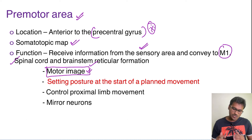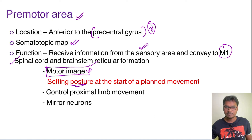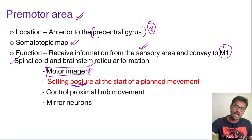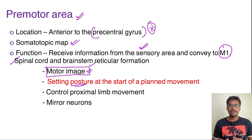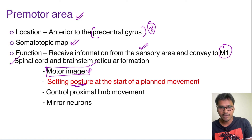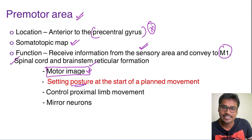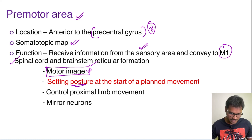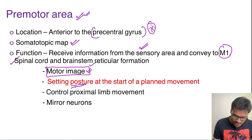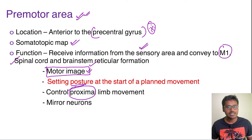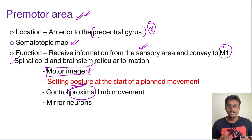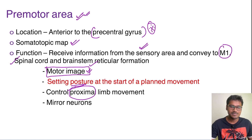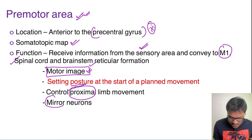The premotor area also sets up the background posture for a planned action. For example, if an object is far away, the body posture must first be adjusted before extending the hand. This setting up of background posture is done by the premotor area, and it is also involved in controlling the proximal limbs, since the proximal side is responsible for maintaining posture.